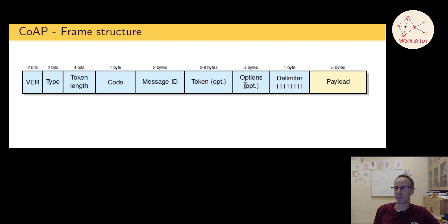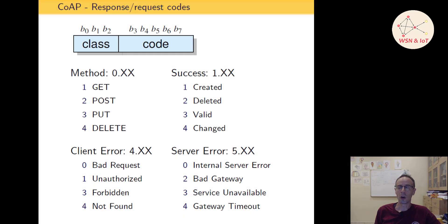And then we have a field for options. This can be one option or more, or even no option—we'll come to this also in a minute. Then it's followed with one byte for a delimiter, which is just everything set to one—the eight bits—and then followed from a payload.